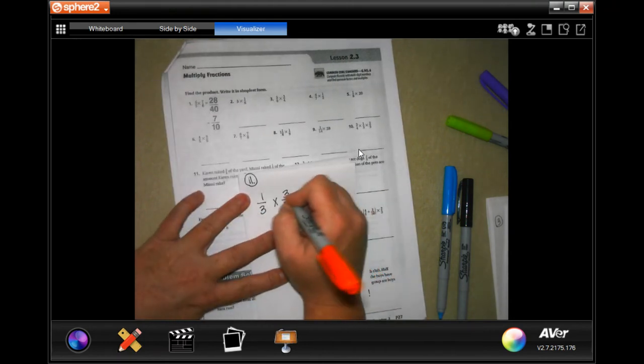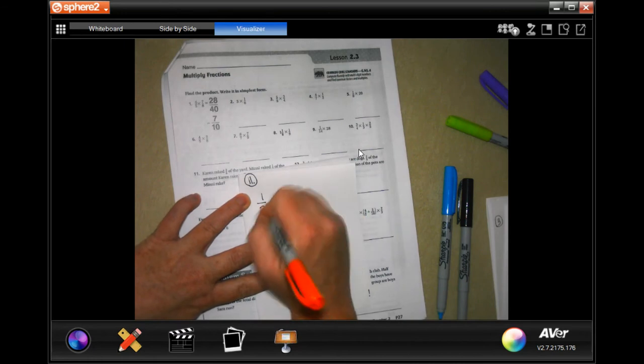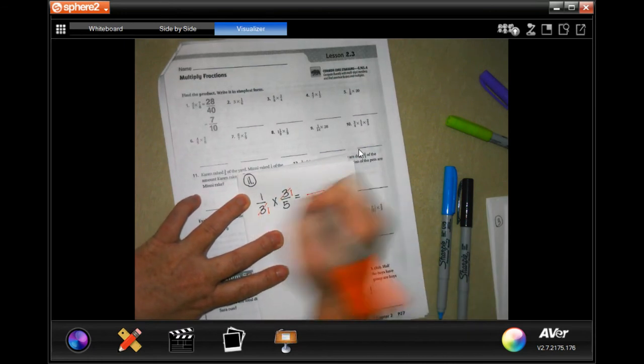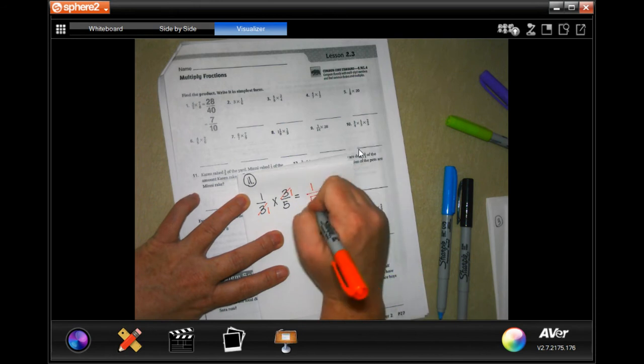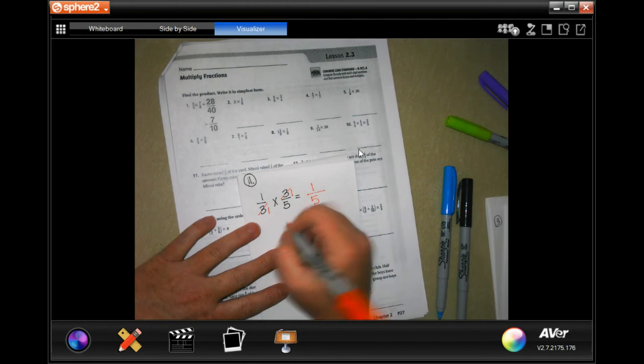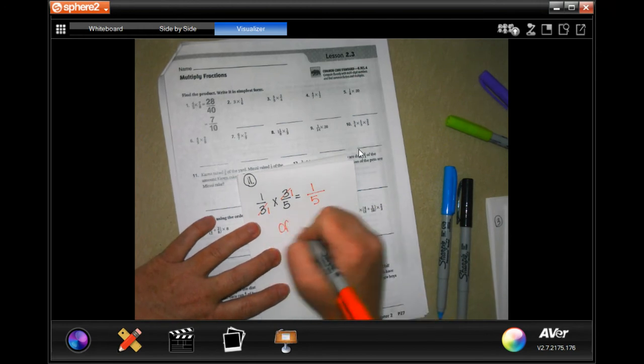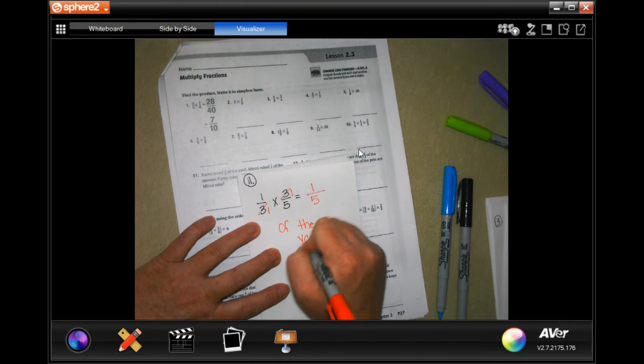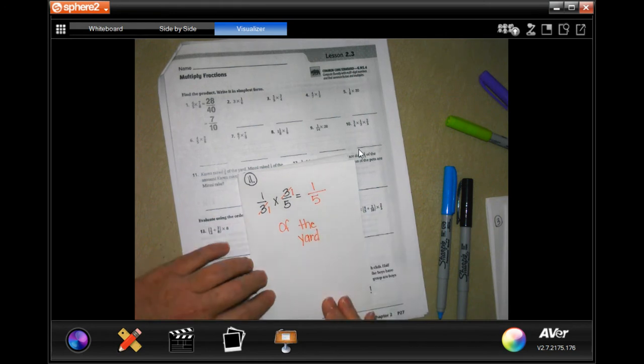See that same number? Cross cancel, put 1. Now when I multiply straight across, I have 1/5. And it is a word problem, so we're going to put 1/5 of the yard.